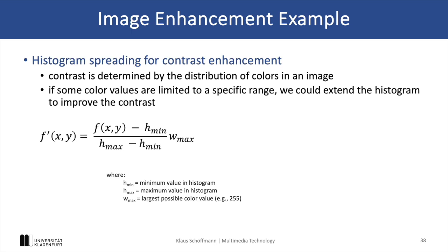Image enhancement focuses on improving the visual quality of an image. An example is histogram spreading, which enhances the contrast. More specifically, histogram spreading adjusts the dynamic range of pixel intensities to the full spectrum of available colors, making the image appear clearer and more vivid. It is achieved by finding the bins where the vast majority of pixel values are contained, denoted by Hmin and Hmax, then subtracting the minimum value from each pixel, dividing by the range (Hmax − Hmin), and multiplying by the maximum pixel value, which is typically 255.